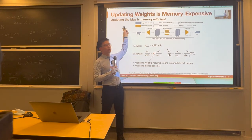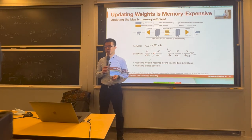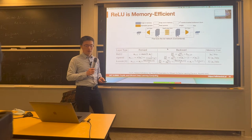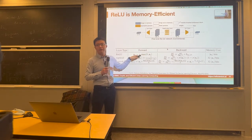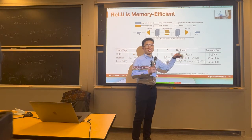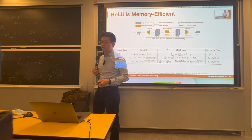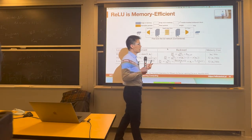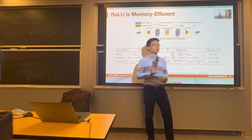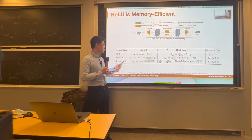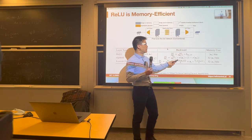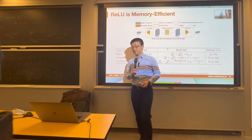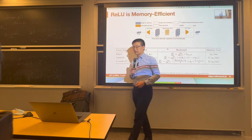We can use this simple method to update the bias, which is memory efficient. Also, the ReLU activation function is quite efficient. If you calculate the ReLU forward and backward, you just indicate whether a location is positive or negative — that requires only one bit to store. So memory cost equals just the number of parameters, compared to other activation functions like sigmoid or h-swish, where backpropagation is more complicated and requires storing the entire activation. ReLU is 32 times cheaper than other activation functions.